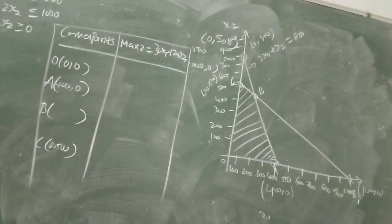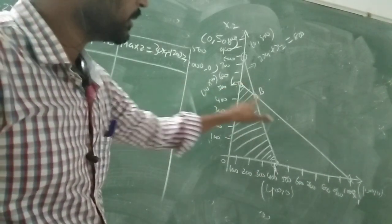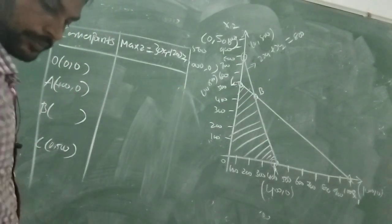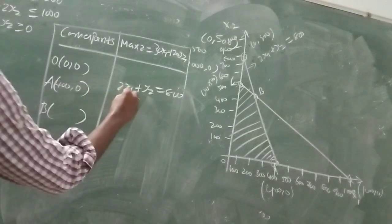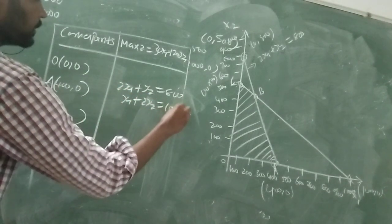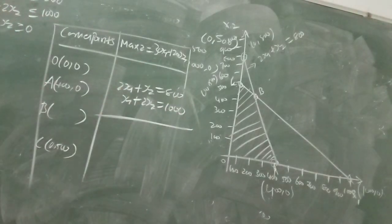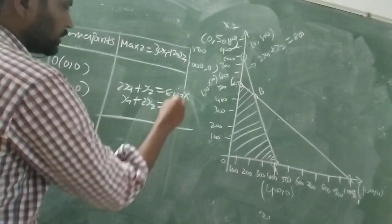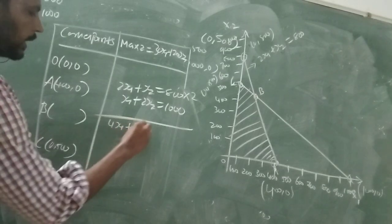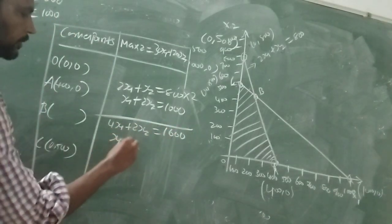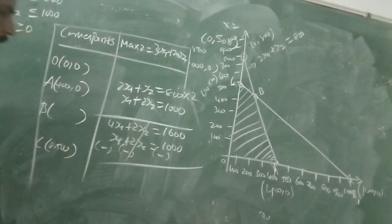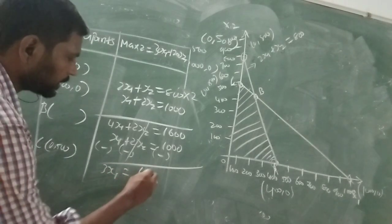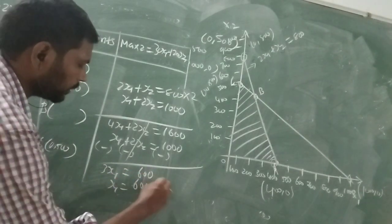So now we have to find B, which is the intersection point. We substitute the two equations: 2x1 plus x2 equal to 800, and x1 plus 2x2 equal to 1000. Multiply the first equation by 2: 4x1 plus 2x2 equal to 1600. Subtract the second equation, so the 2x2 terms cancel. Remaining: 3x1 equal to 600, so x1 equal to 200.